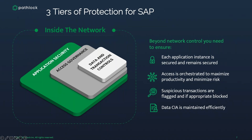When we look at the three tiers of protection for SAP, inside the network you have application security — granting permissions and roles for users. But you also need additional steps like access governance: should users be able to do these things? Are you doing user access reviews? What is your risk profile? And then data and transaction controls — how are you going to protect it? There is really a shift to protect the data and the transactions themselves.